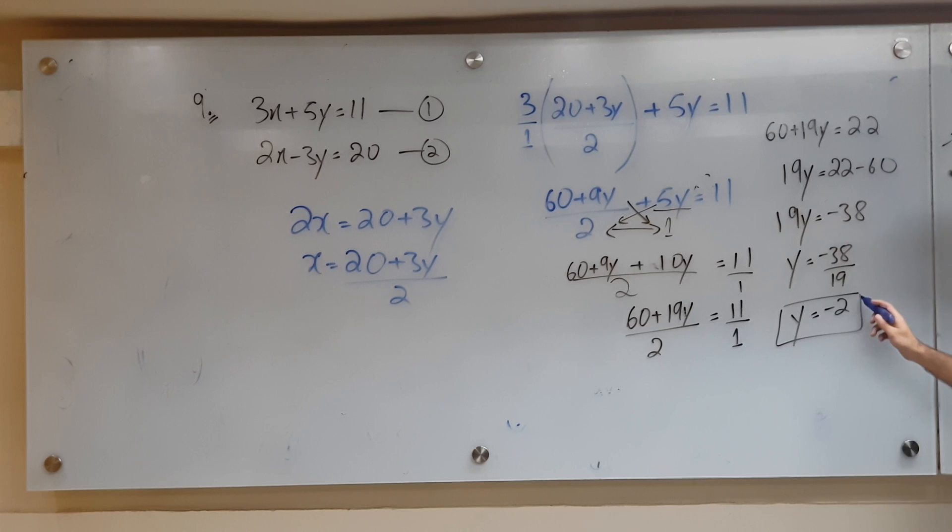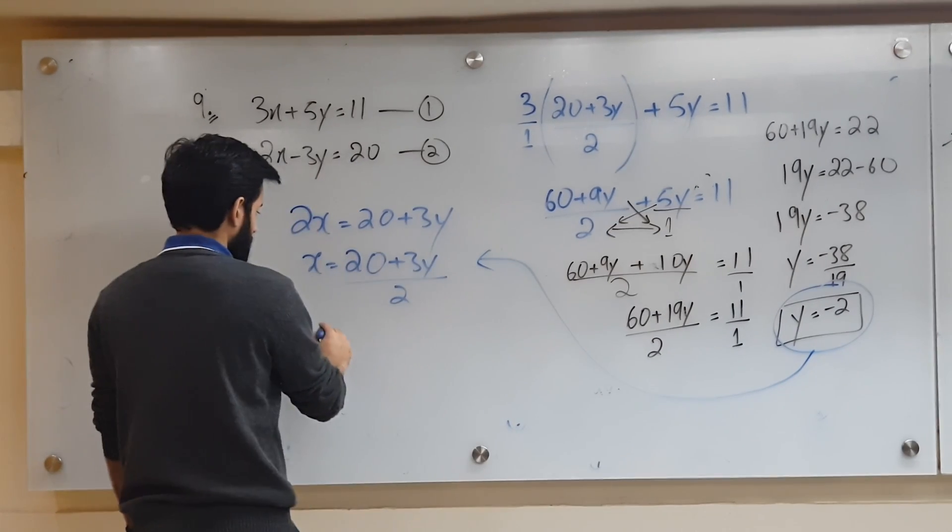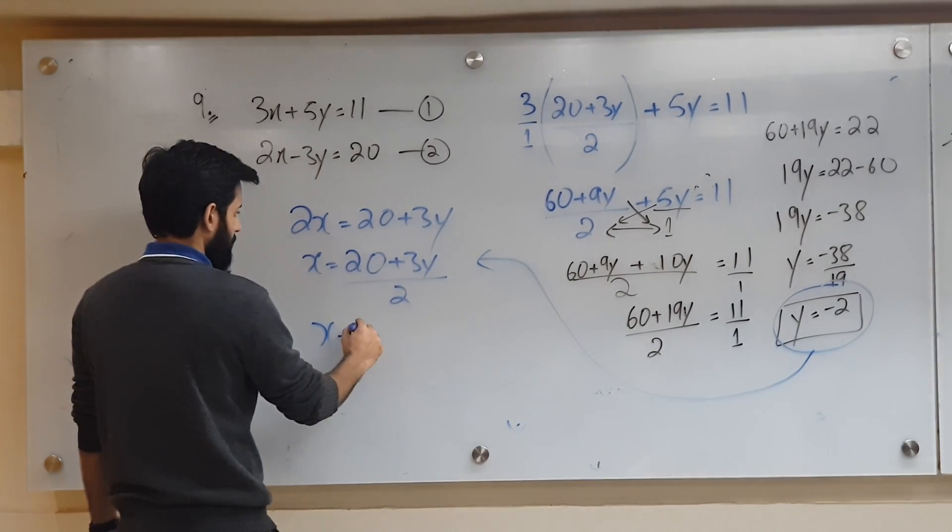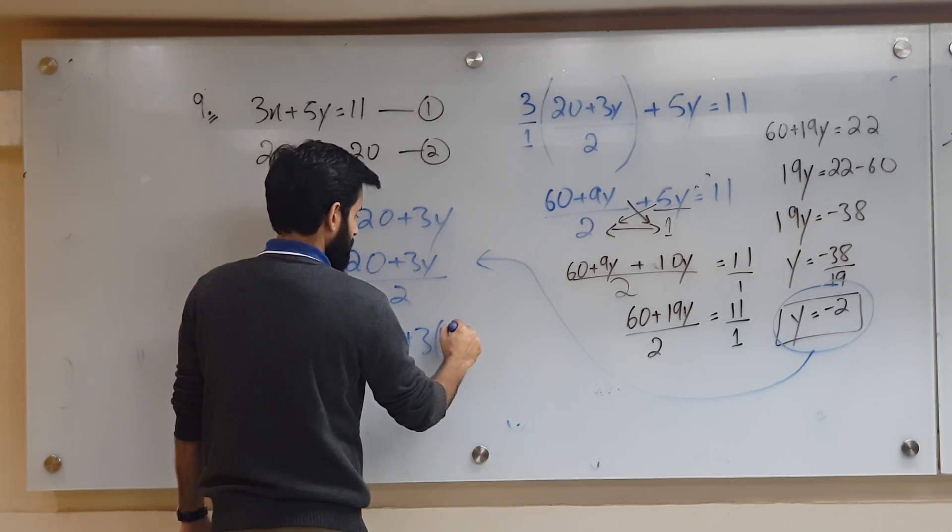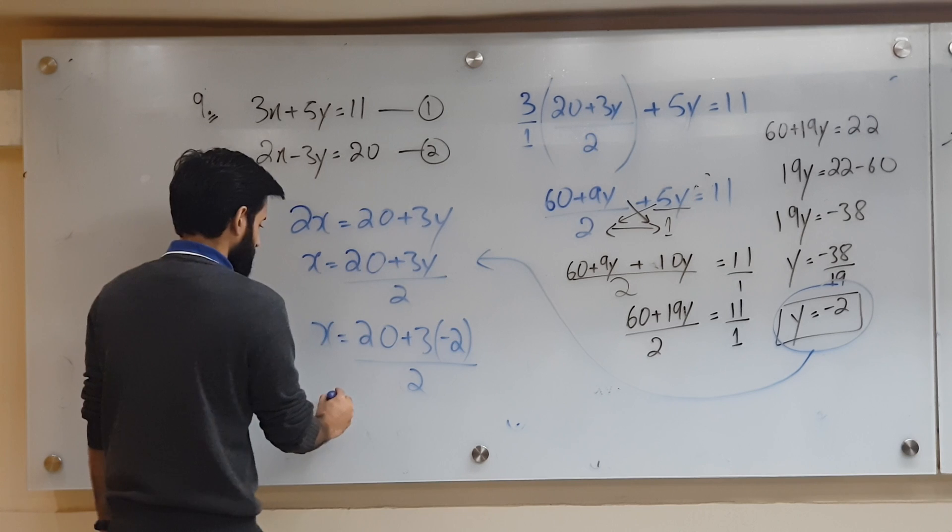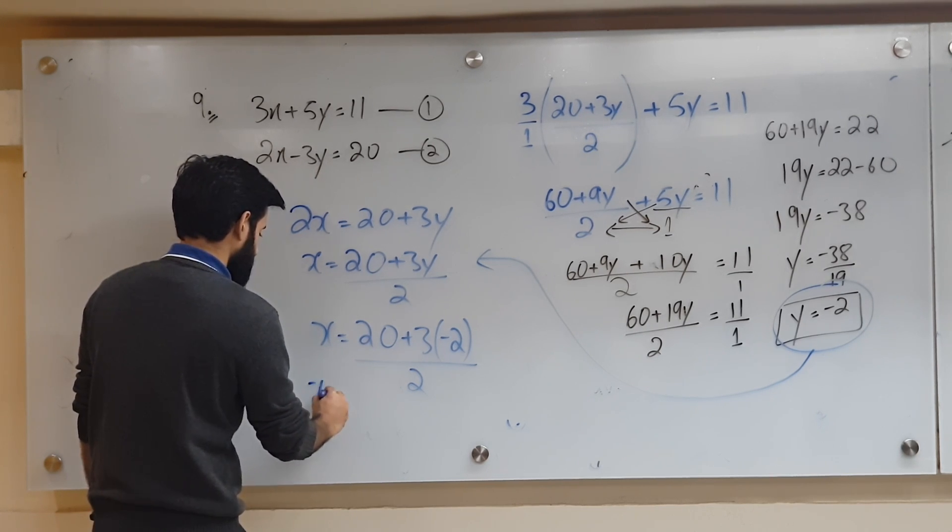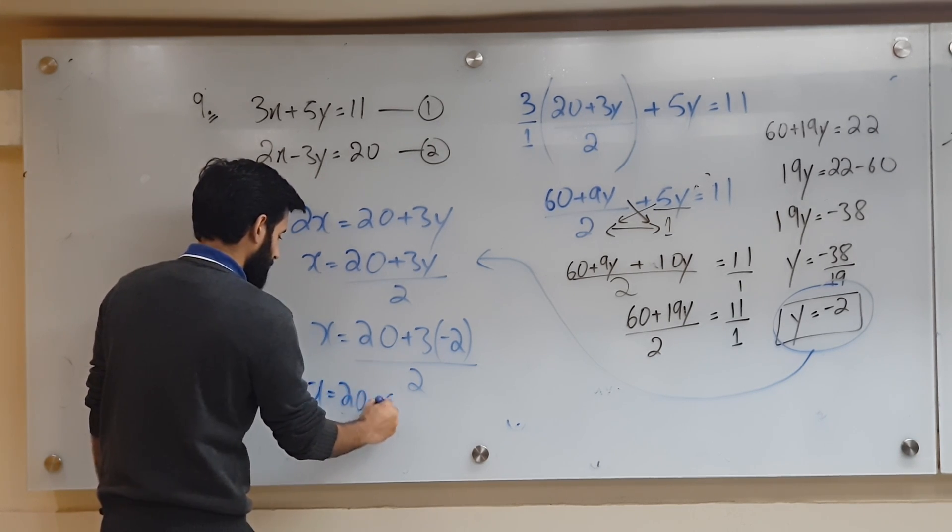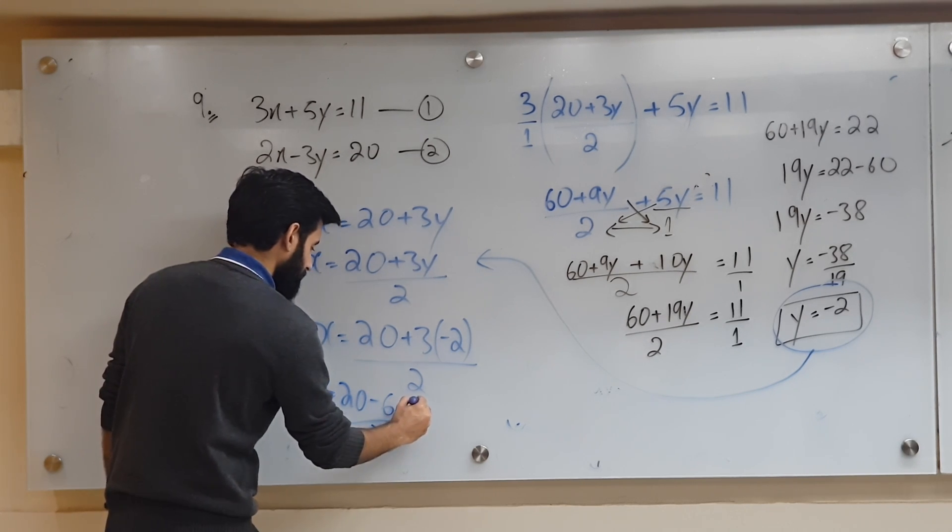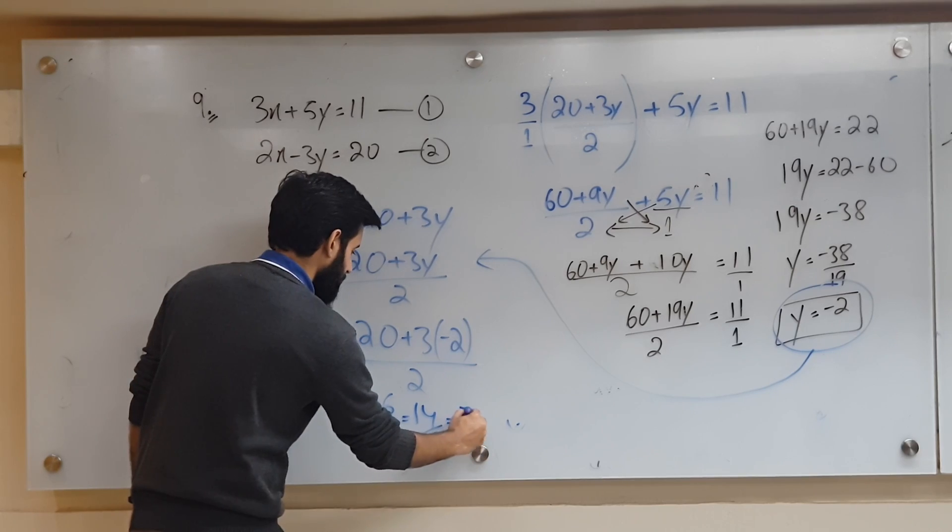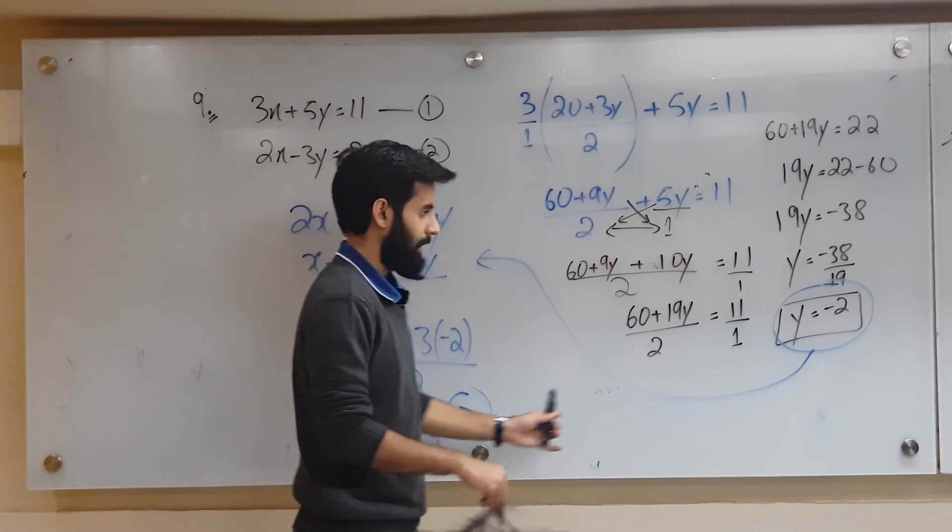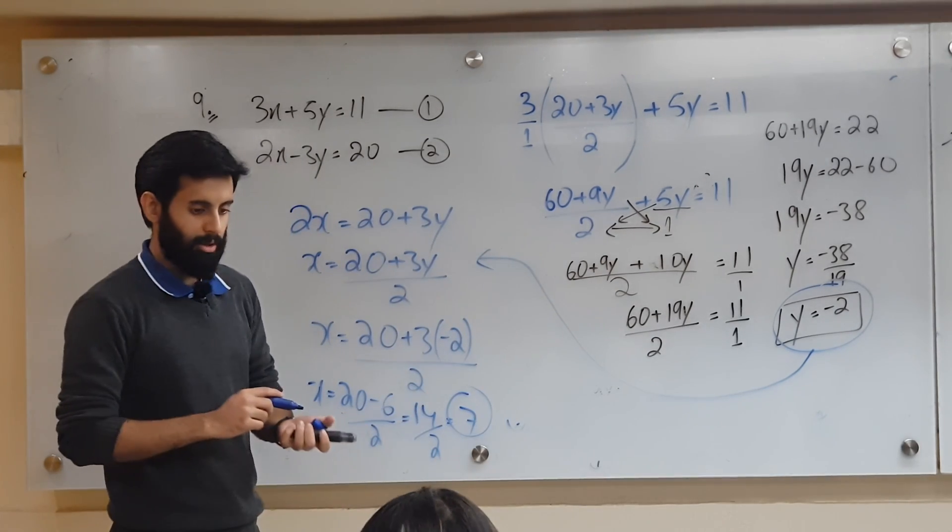No, no, we have to put the y value into the x. Let's use this value and plug it in here in place of y to figure out the value of x. Let's find out. Pay attention. x equals to 20 minus 6 over 2. What's 20 minus 6? 14. What's 14 upon 2? 7. There you go. 20 minus 6 is 14, 14 upon 2 is 7.